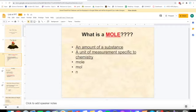So the mole - what is a mole? It is the amount of a substance, a unit of measurement specific to chemistry. You can see it in the following three ways: moles spelled M-O-L-E, moles spelled M-O-L, and then N is sometimes representative of mole.